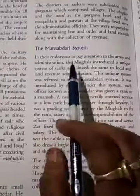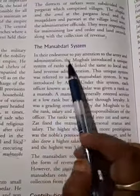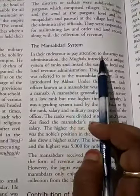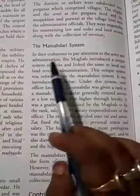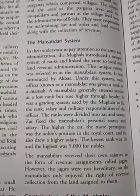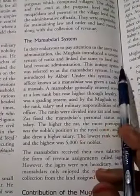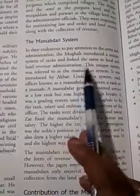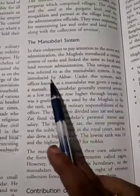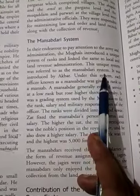Let's start the topic. In their effort to pay attention to the army and administration, the Mughals introduced a unique system of rank and linked it to local and land revenue administration. This unique system was referred to as the Mansabdari system.